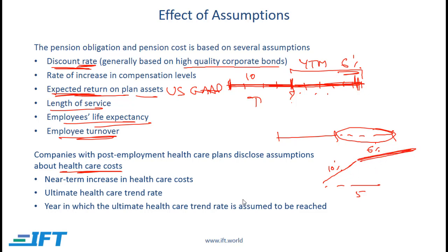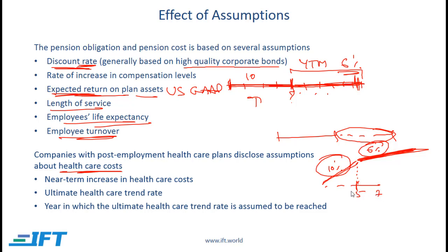After that initial period, the cost might rise at 6%. The 10% represents the near-term increase in health care costs, the 6% is the long-term trend rate, and five years is the transition point between them. A high near-term increase or a high long-term rate both increase the value of the obligation. Similarly, if instead of five years the 10% trend continues for seven years, that also increases the present value of the obligation.